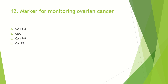Marker for monitoring ovarian cancer: Option A: CA 15.3. Option B: CEA. Option C: CA 19.9. Option D: CA 125. The answer is CA 125. CA 15.3 is a marker of breast cancer. CA 19.9 is a marker of pancreatic cancer. CEA is a marker of colon cancer.